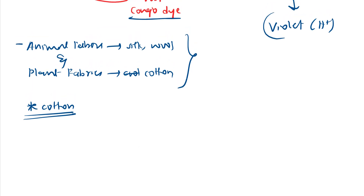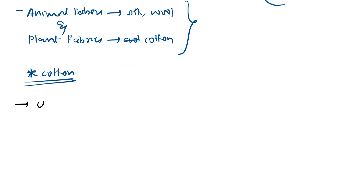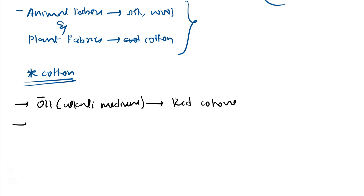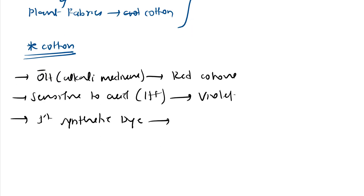In alkali or OH⁻ medium, Congo red is red in color. It is very sensitive to acid — if any inorganic acid like HCl is added, it converts from red to violet. Congo red is also noted as the first synthesized dye, and it was initially used to dye cotton directly.